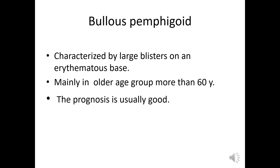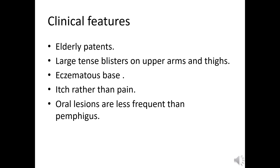The second condition is bullous pemphigoid, characterized by large blisters that are tense and intact, based on erythema, with erythematous skin under the blisters. It affects an older age group than pemphigus vulgaris, and the prognosis is usually better. Clinically, patients are elderly, blisters are larger and tense because they have a thicker roof, located in a deeper layer of the skin. The areas affected are thighs and arms, and it is itchy rather than painful. Oral lesions are not common.